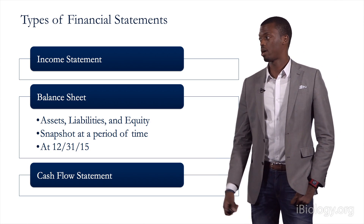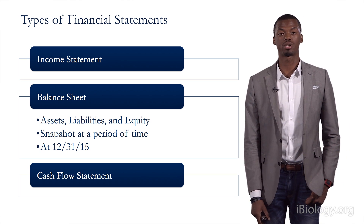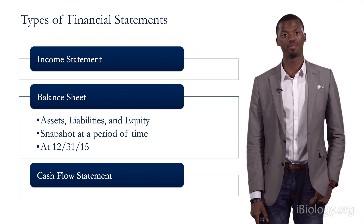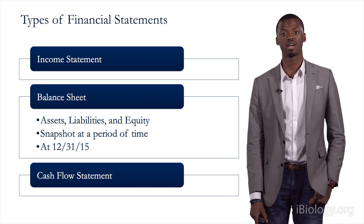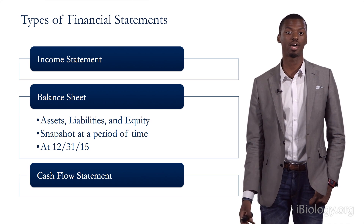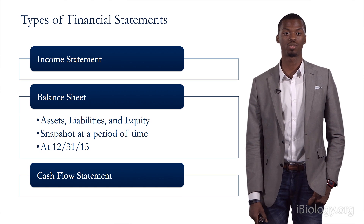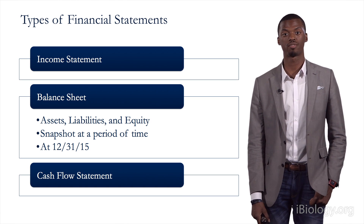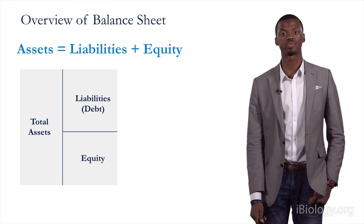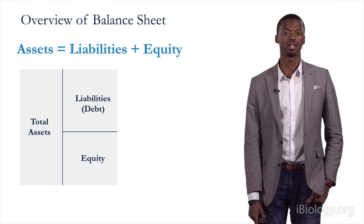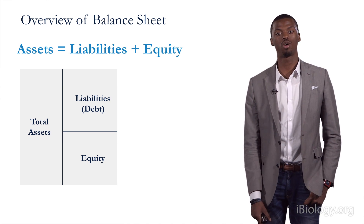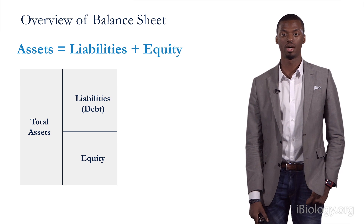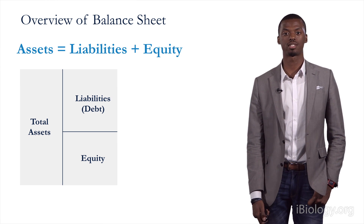The second statement is the balance sheet, which encompasses assets, liabilities, and equity. Different from the income statement, the balance sheet is just a snapshot at a point in time — in our case December 31st, 2015. As scientists, we love equations: assets always equals liabilities plus equity. Liabilities is just debt — what the company owes to any lenders — and these two always have to balance out.